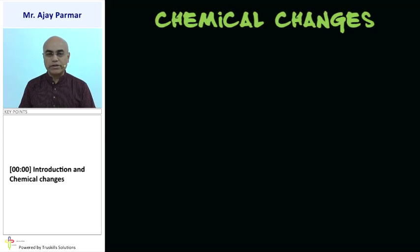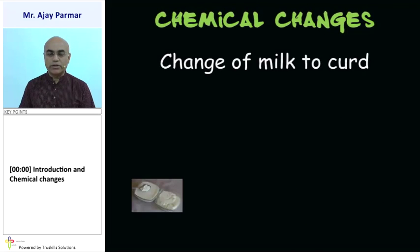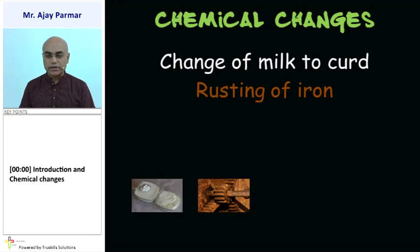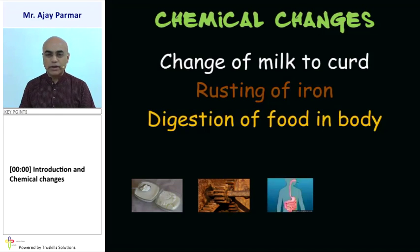Some of the chemical changes that we see in our day-to-day life: for example, change of milk into curd — the action of lactobacillus bacteria converts milk into curd. Rusting of iron, when iron is exposed to moisture, it gets rusted — that is also a chemical change. Digestion of food in our body is considered to be a chemical change, where complex food is converted into simpler food.